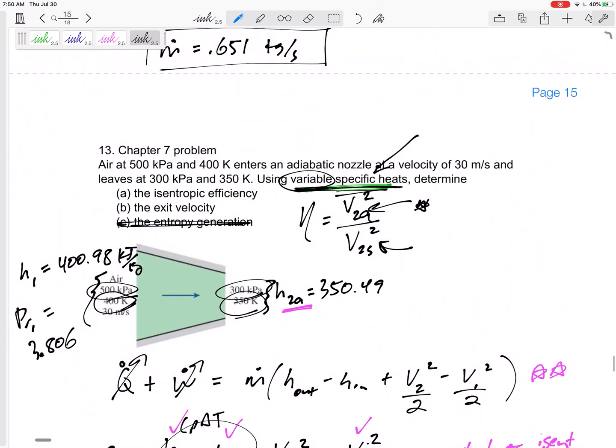Problem number seven, the last problem - then you'll be finished with the semester. An isentropic efficiency problem worth I think only 15 points, a little bit less than those 20-point problems. Good luck - you have two and a half hours for seven problems. I think you can do it.